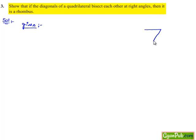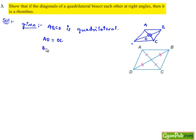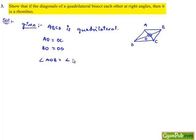Let us consider a quadrilateral ABCD in which the diagonals AC and BD bisect each other perpendicularly at point O. So the given information is: ABCD is a quadrilateral, AO is equal to OC, BO is equal to OD, and angle AOB = angle COD = angle BOC = angle AOD = 90 degrees.